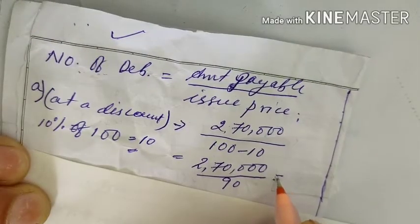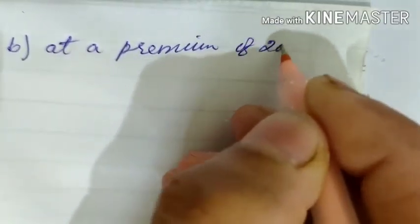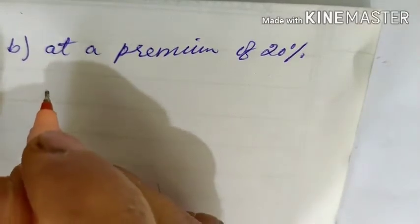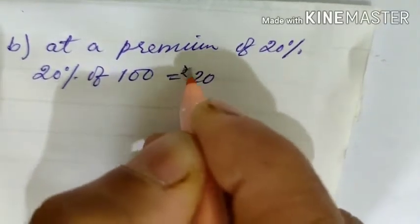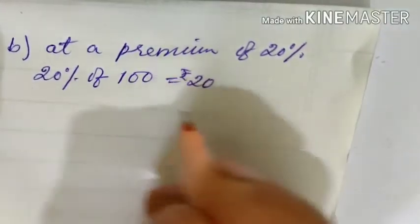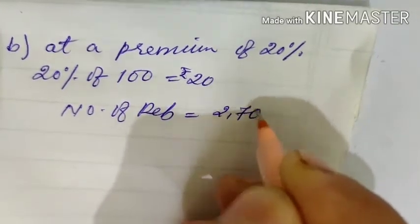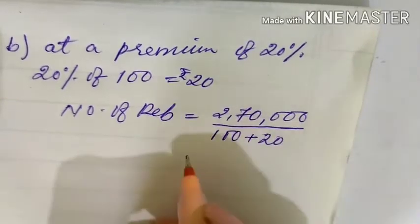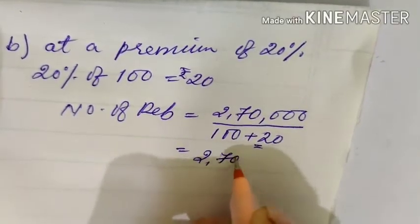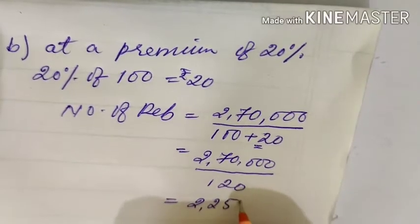When issued at a premium of 20%, the premium amount is 20% of 100 = rupees 20. So the issue price is 100 plus 20 = 120. Number of debentures = two lakhs seventy thousand divided by 120 = 2250 debentures.